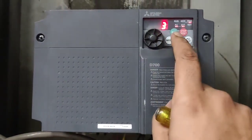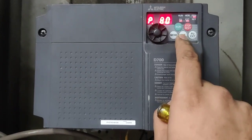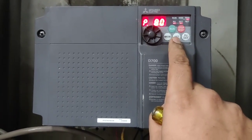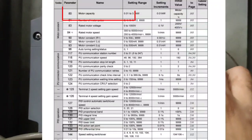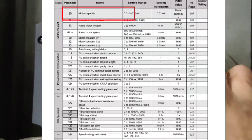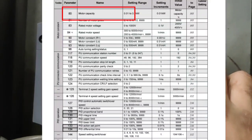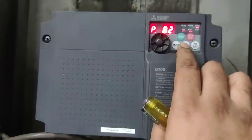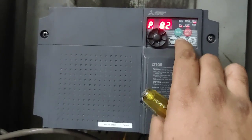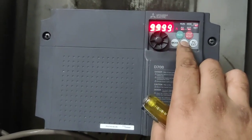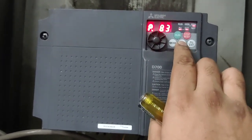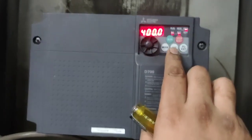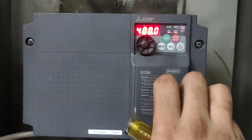Next parameter is P80, which is the motor capacity parameter — enter your motor kilowatt value here. P83 is for motor rated voltage — we set 400 V for motor rated voltage in P83.